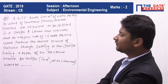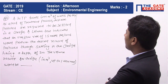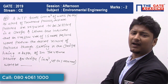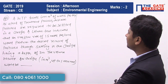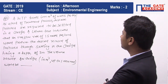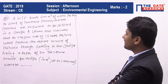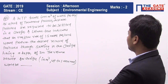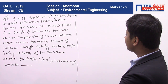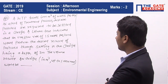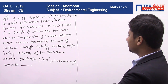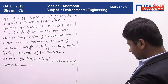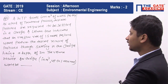So I'm reading this question. A WTP — water treatment plant — treats 6000 meter cube of water per day. As part of the treatment process, discrete particles are required to be settled in a clarifier. A column test indicates that an overflow rate of 1.5 meter per hour could produce the desired removal of particles through settling in the clarifier, which has a depth of 3 meters. The volume required for the clarifier in meter cube up to one decimal could be?